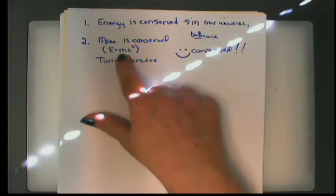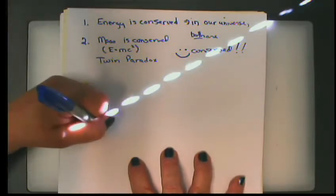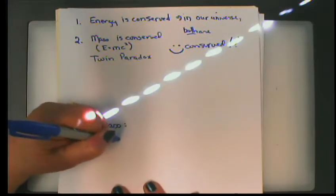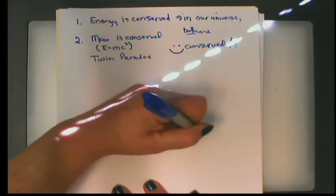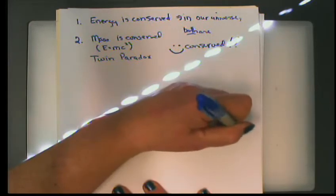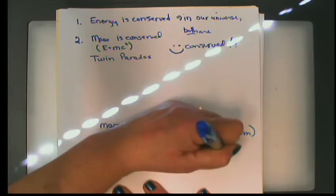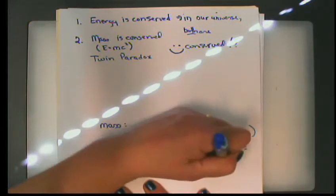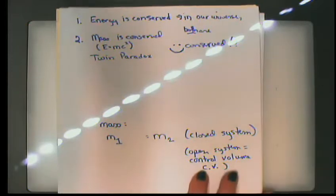So, aside from E equals mc squared, let's talk about conservation of mass. If you look at the kind of systems we looked at before, we just had mass at time 1 equal to mass at time 2 — that is a closed system. An open system, also sometimes referred to as a control volume and abbreviated CV, has mass coming in and mass going out.